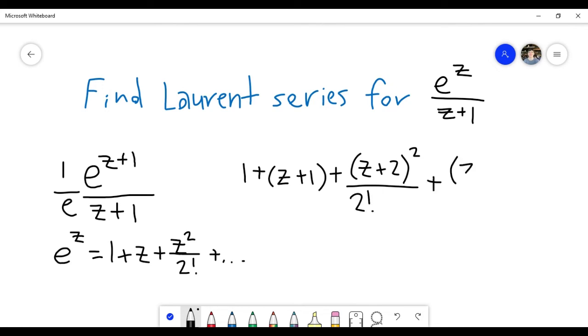Plus z plus... Oops, I wrote z plus 2. This should be z plus 1 plus z plus 1 to the 3rd over 3 factorial. And so on like that.